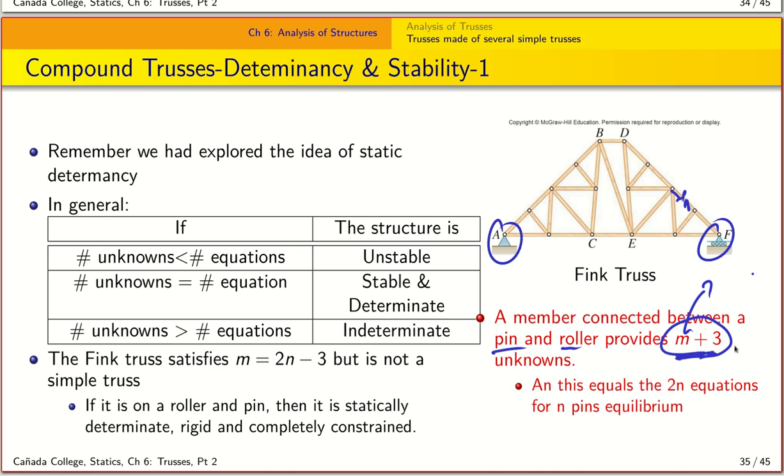So we have M plus 3 unknowns. However, we know that the Fink truss does satisfy M equals 2N minus 3. That means M plus 3 equals 2N. And so we have a situation here for the case where we have a pin joint and a roller joint that this Fink truss is in equilibrium and is a stable structure.